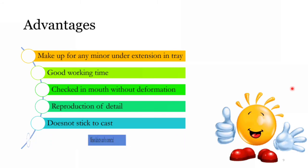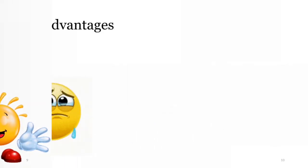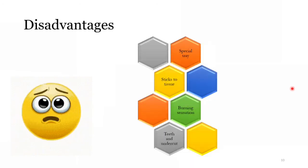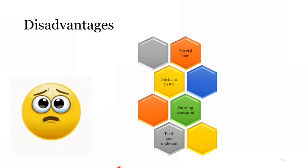Minor defects can be corrected easily. You don't have to worry about small air bubbles or small details, but if larger areas are defective, you'll have to scrape it all. Now for disadvantages: You can't use normal stock trays; you need a special tray, especially acrylic trays for secondary impressions. This material tends to stick to tissue. Eugenol causes burning sensation. Since this material isn't flexible like elastomeric impression materials, in edentulous patients with severe undercuts, you cannot use this material as it may break or tear in areas with undercuts or interproximal areas.